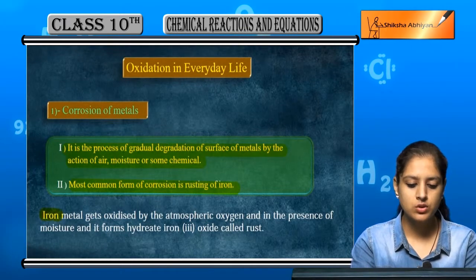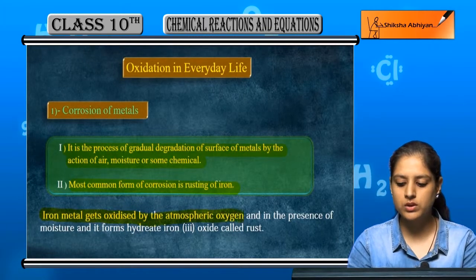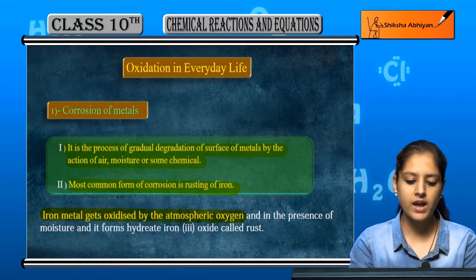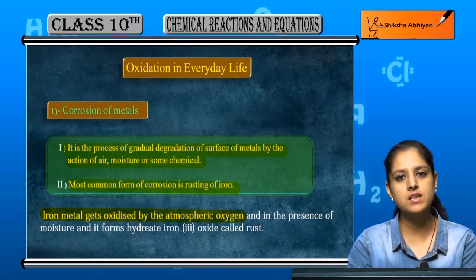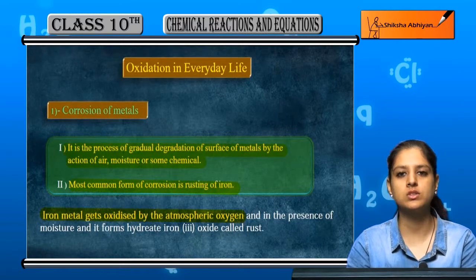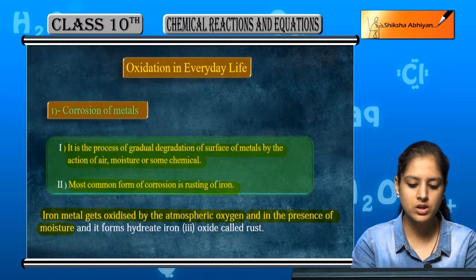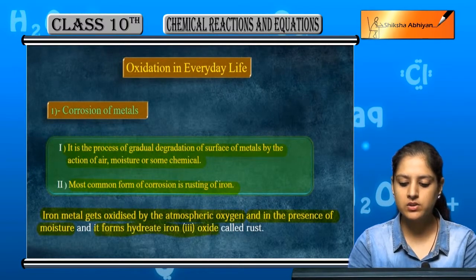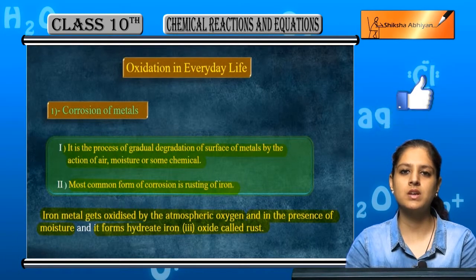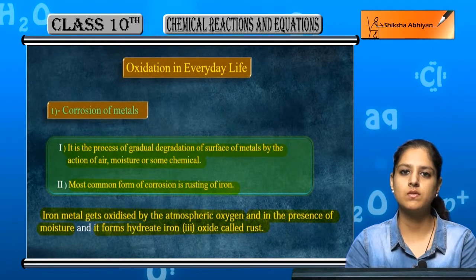If we talk about rusting of iron, iron metal gets oxidized by the atmospheric oxygen. Us ki wajah se usmein oxygen add ho rahi hai, and in the presence of moisture it forms hydrated iron oxide called rust. Us ke upar rust ki ek layer aa jati hai jis ki wajah se uska surface damage ho jata hai.